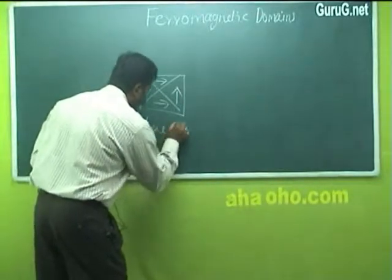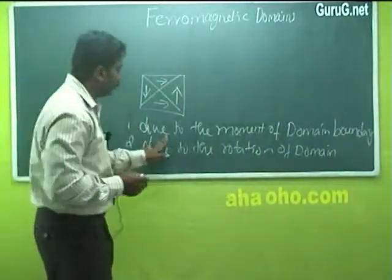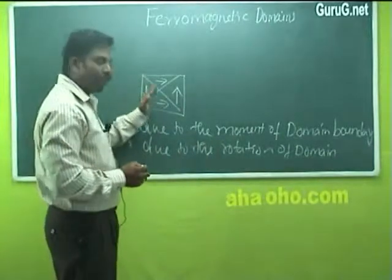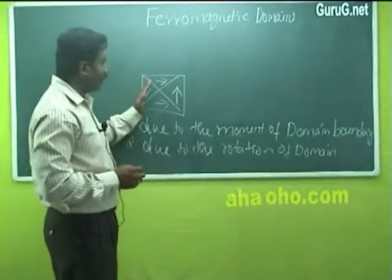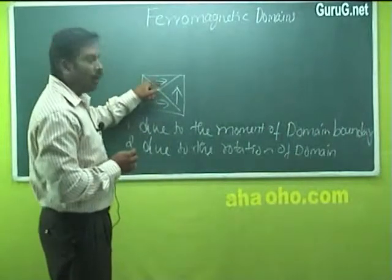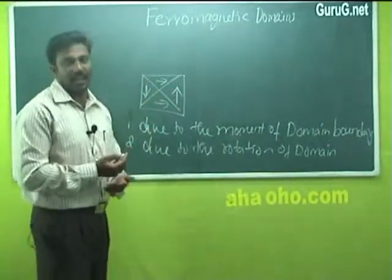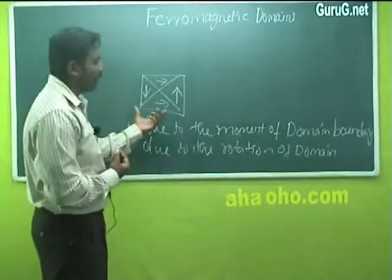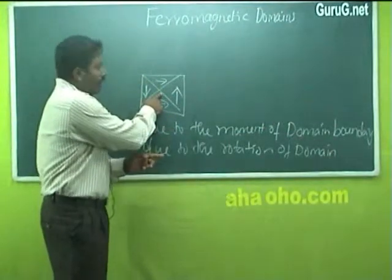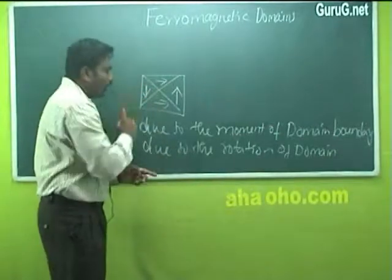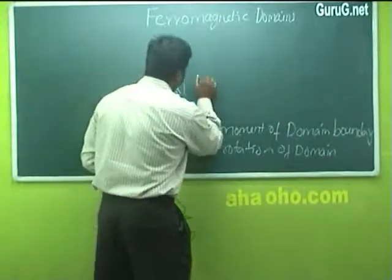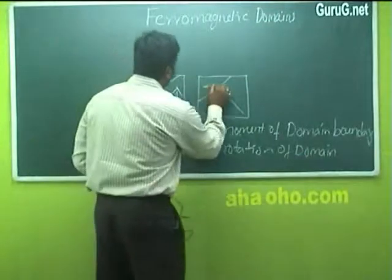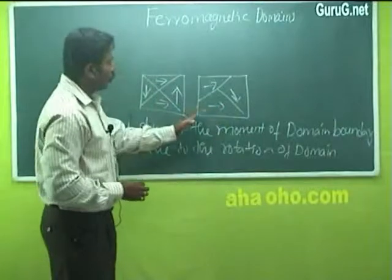Magnetization occurs due to two processes: one is due to the movement of domain boundaries, and the other is due to the rotation of the domain. Initially, before placing the ferromagnetic material in an external magnetic field, these domain areas will have a specific area and in each domain the spontaneous magnetization is in a different direction, so they do not have magnetization. After placing the ferromagnetic material in the magnetic field, these domain walls — or domain boundaries — start to move, meaning the area of the domain increases. This occurs due to a weaker field.